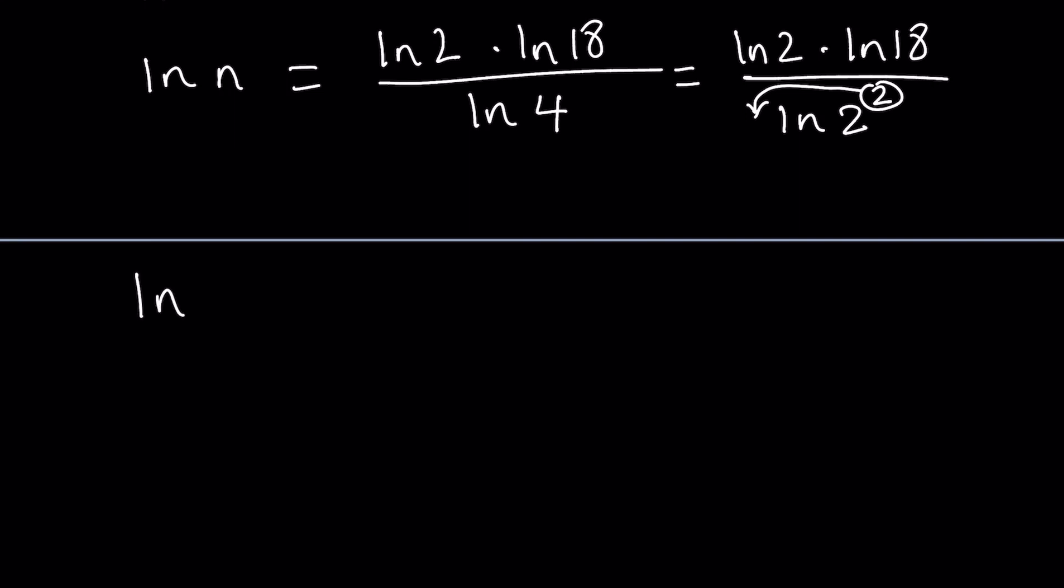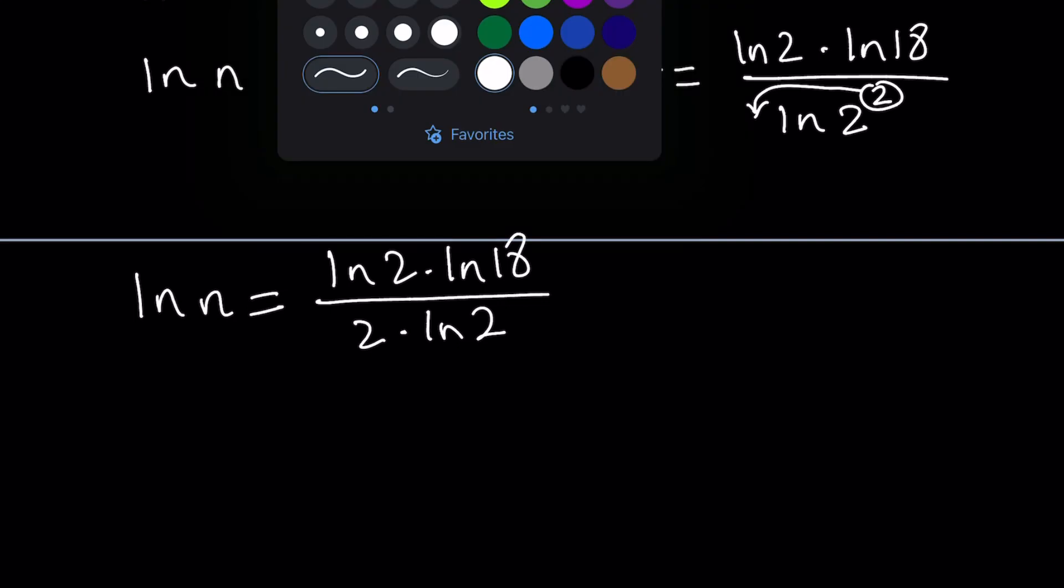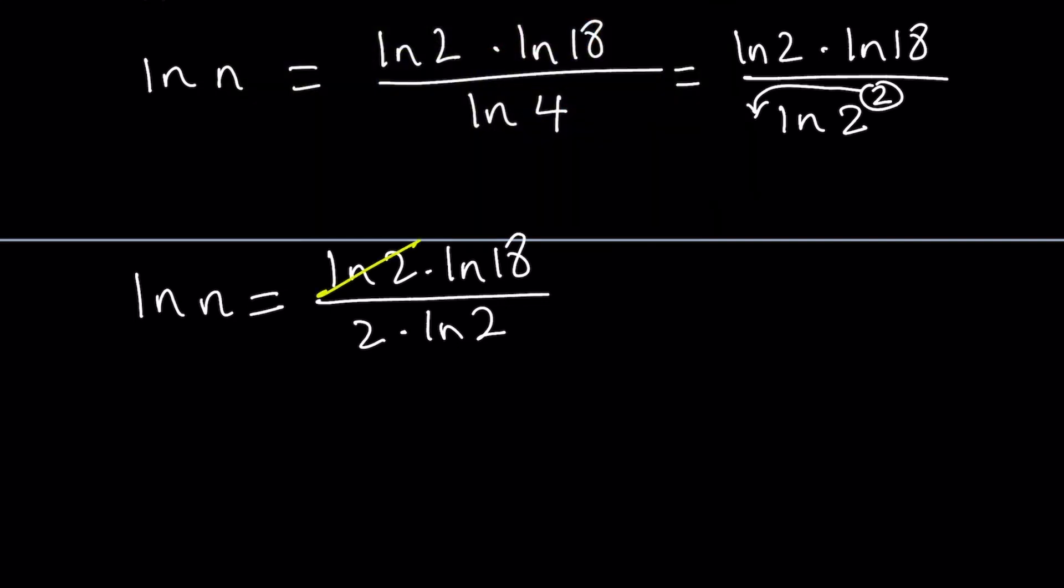Let's divide both sides by ln 4. So ln n becomes ln 2 times ln 18 divided by ln 4. Notice that ln 4 can be written as ln 2 squared and the 2 can be moved to the front because that's an exponent. The ln 2 cancels out, and we end up with ln 18 over 2.